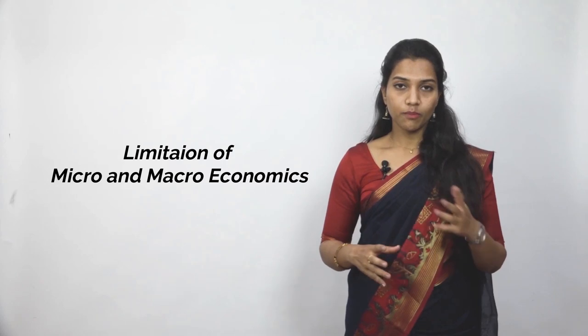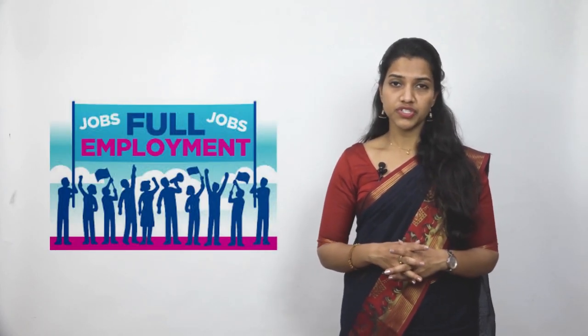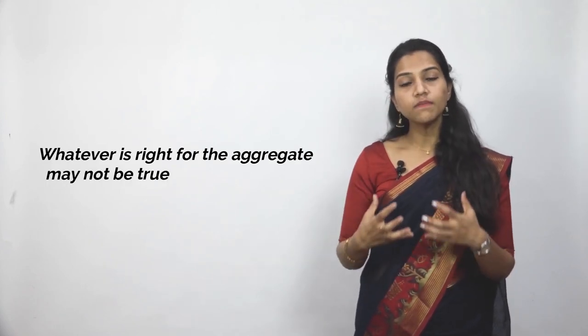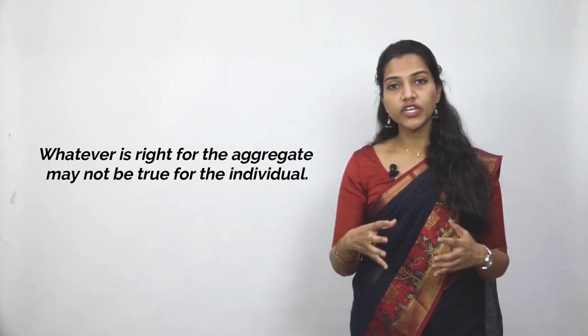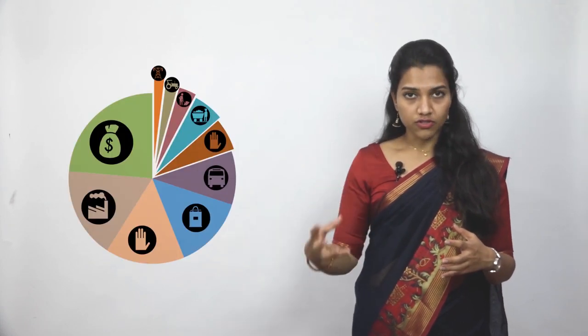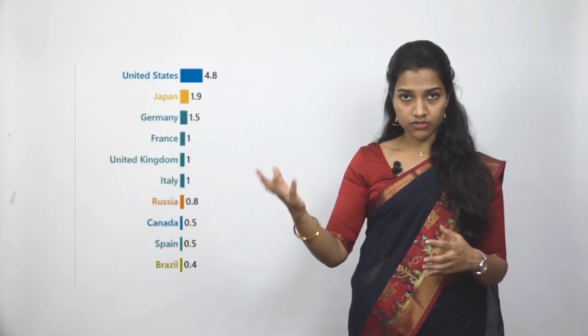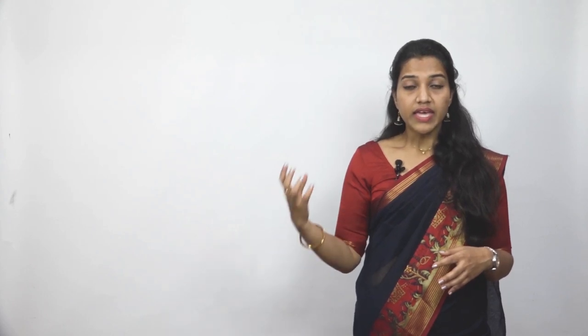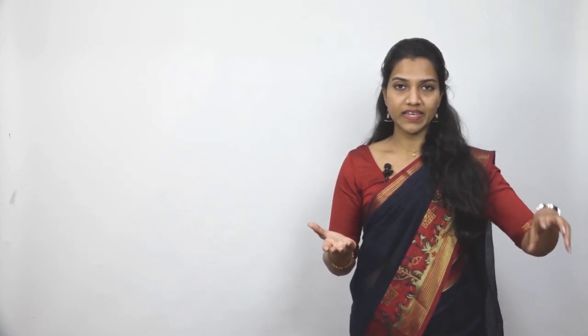Regarding limitations: a limitation of microeconomics is its assumption of full employment, which is an unrealistic concept. A limitation of macroeconomics is that what is true for the aggregate may not be true for the individual. For example, a rise in the GDP rate of a country does not mean all sectors are contributing equally — each sector's contribution may differ. The aggregate picture may not reflect the situation of a particular individual sector.